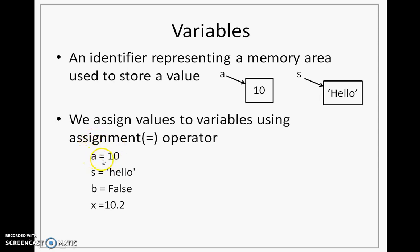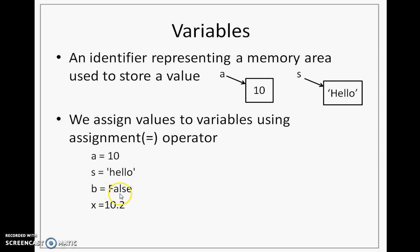That is why this operator is called an assignment operator. The second scenario is created by saying S equal to hello. So hello is created and is assigned to S, or S refers to hello. Similarly, in B we have a value stored called false, and in X we have a value stored called 10.2.